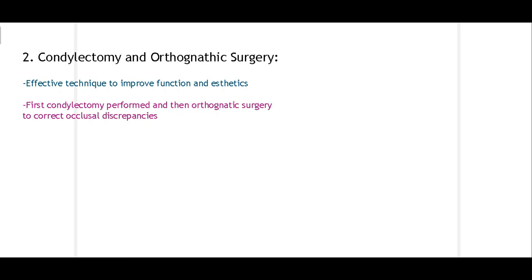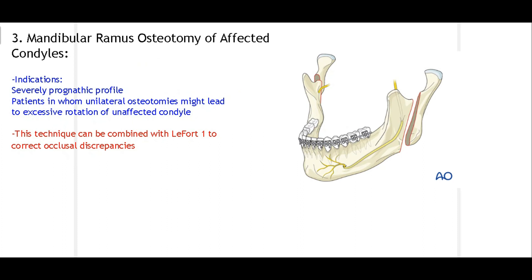The second treatment option is condylectomy combined with orthognathic surgery. After removing part of the condyle, orthognathic surgery may be performed for patients with protrusion of the teeth, mandible, or maxilla, in order to improve both function and aesthetics. This combined approach corrects occlusal discrepancies such as open bite and crossbite.